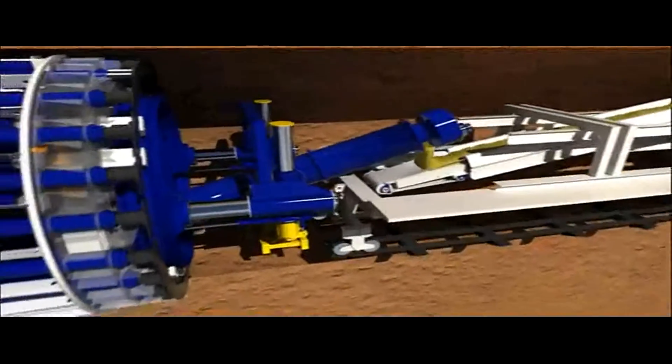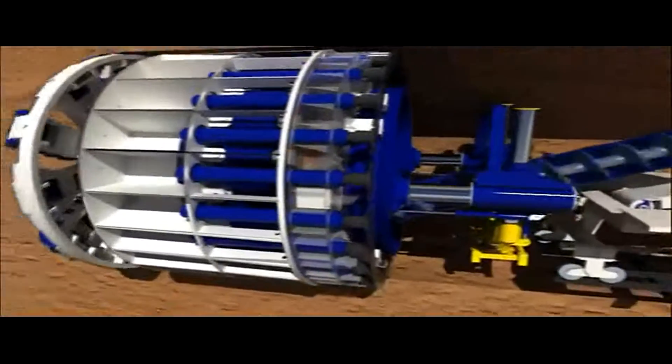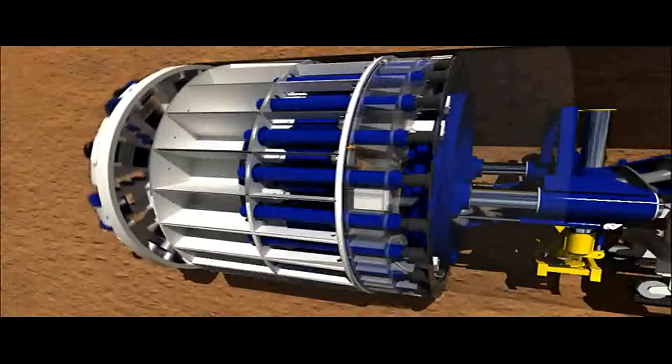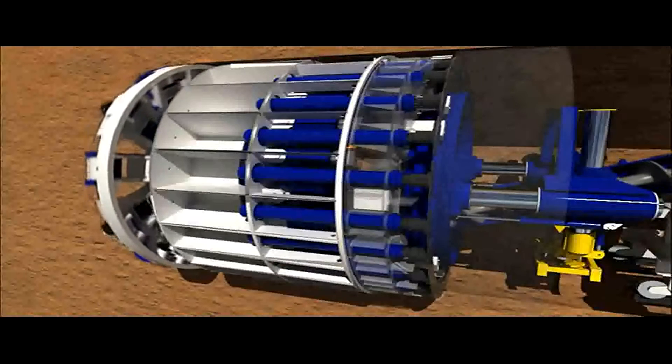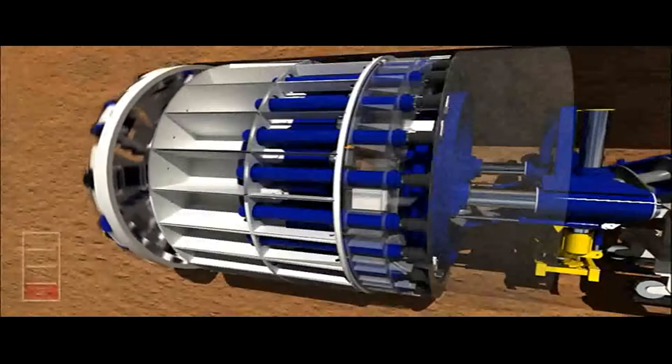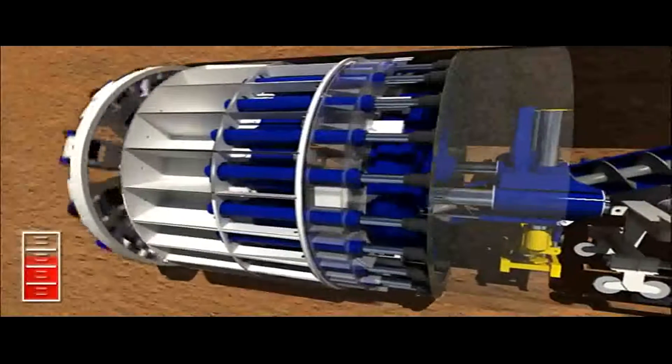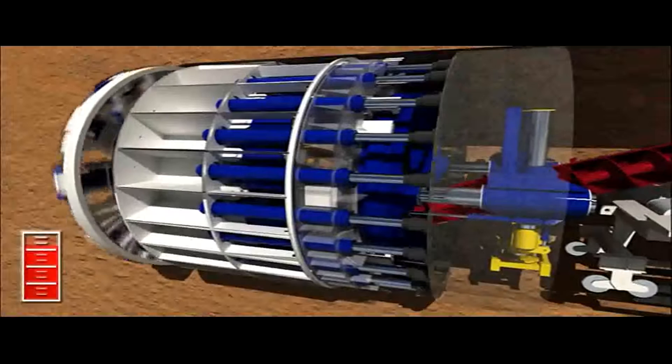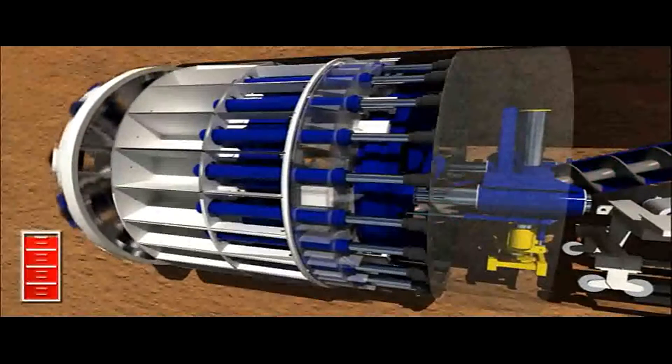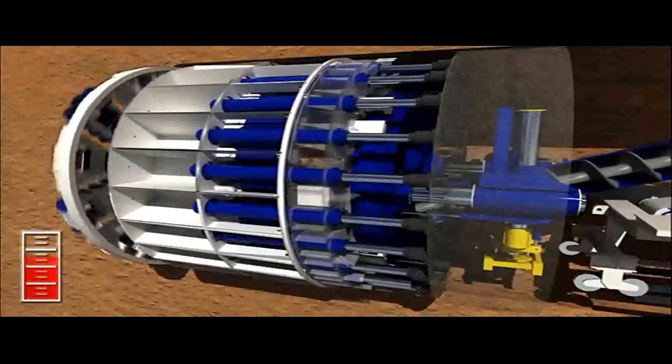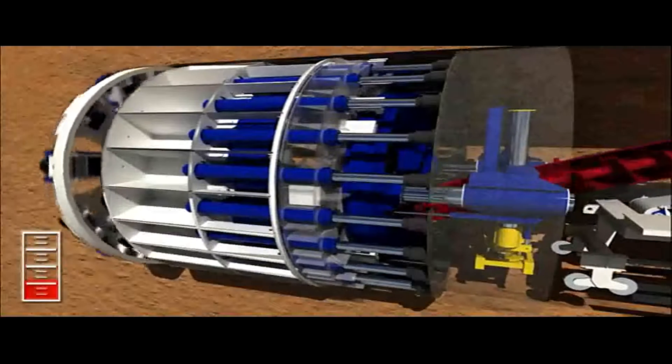The ability to balance the earth pressure is essential in order to safely and efficiently excavate the tunnel face. A TBM operator can control the pressure in the chamber continuously. To raise pressure, the operator can either increase the machine's rate of advance or decrease the rotation of the screw conveyor. To lower pressure, the operator does the opposite: either decrease the rate of advance or increase the rotation of the screw conveyor.